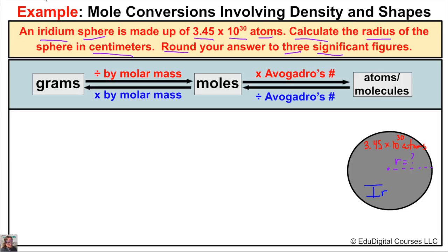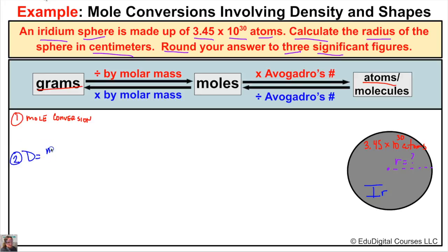So how can we do this problem? We know that we have this many atoms of iridium. If we know the number of atoms of iridium, we can use the mole conversion process to figure out the number of grams. So in our very first step, we're going to use mole conversion to determine the mass in grams of this iridium sphere. Once we're done doing that, in our second step we can use the density formula — density equals mass divided by volume.